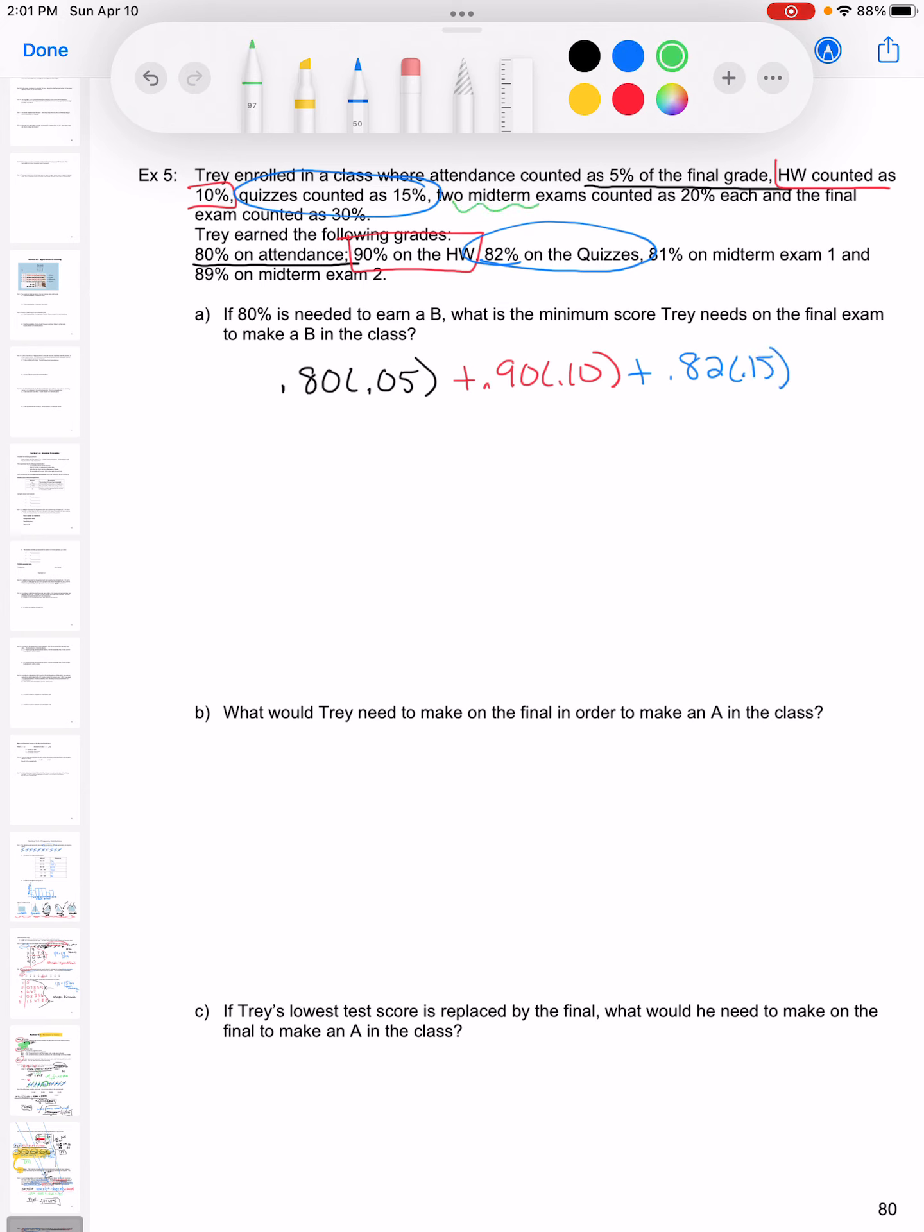And there are two midterms. They each count 20%, and he had an 81 on his first midterm and 89 on his second midterm. And then last, the final exam is counted as 30%, but we don't know what he made on the final exam. So I'm going to call that X because I don't know what that is.